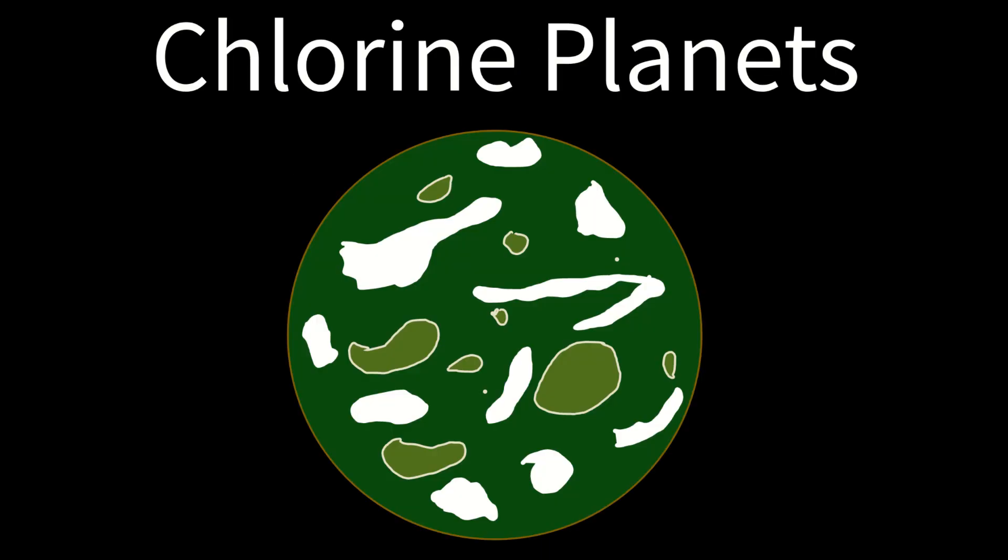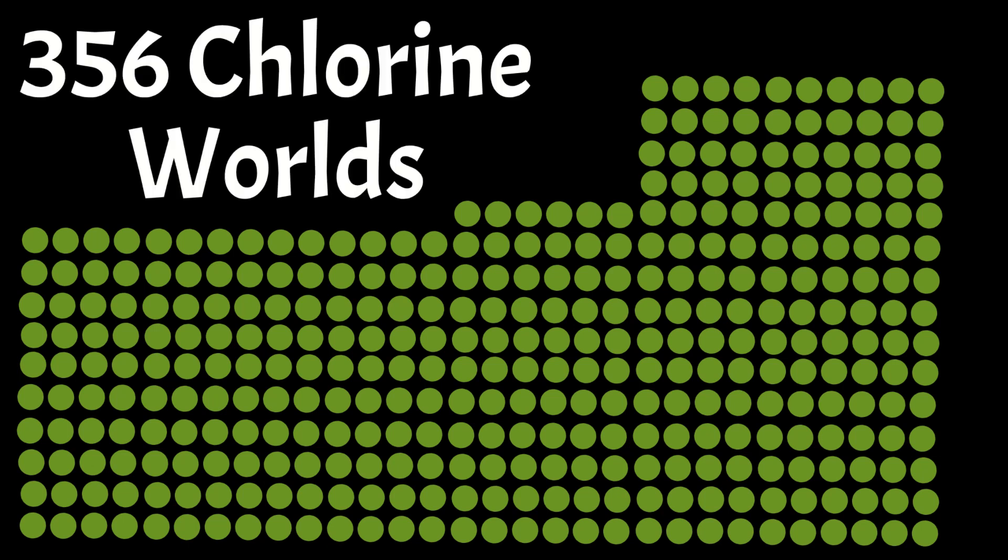Where might you find these environments? On normally rare planets called chlorine planets. So rare, in fact, that we shouldn't be able to find one in the Milky Way. However, Terrigen explorers have found 356 so far.